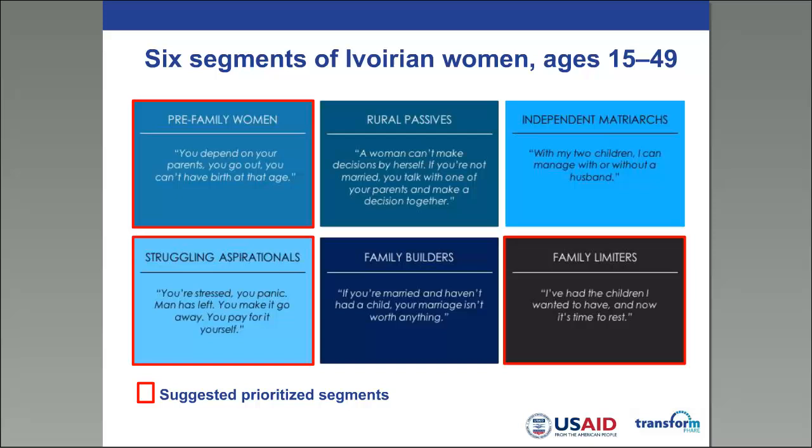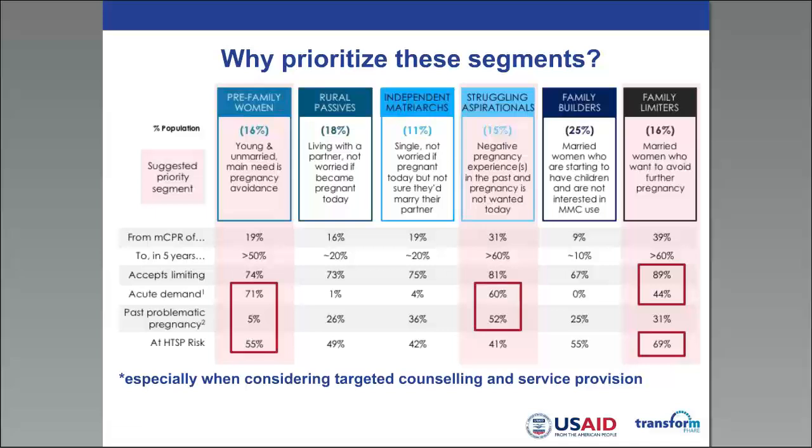With the quantitative analysis, we identified six different segments of women, and we decided to prioritize specifically on three segments. The pre-family women — those who are still depending on their parents or not ready to get pregnant. Those we call the strongly aspirational — women who do want to get pregnant, but not right now. And finally, the family limiters — those women who may have had the number of children they already wanted. We analyzed different factors to prioritize the segments, for example assessing whether women consider pregnancy problematic and estimating their risk of unintended pregnancy.